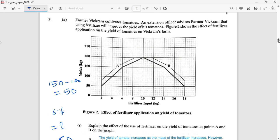Question number two: Farmer Vikram cultivates tomatoes. An extension officer advises Farmer Vikram that using fertilizer will improve the yield of his tomatoes. Figure 2 shows the effect of fertilizer application on the yield of tomatoes on Vikram's farm. Here we have a line graph with yield on the y-axis, which is the dependent variable, and fertilizer input on the x-axis, which is the independent variable.